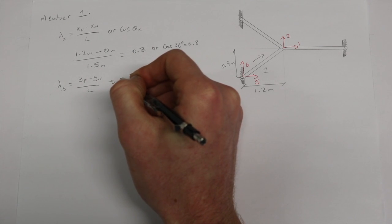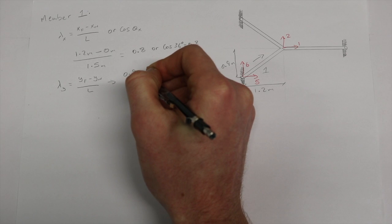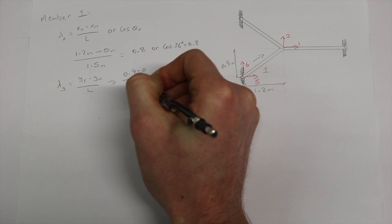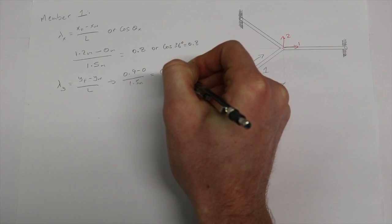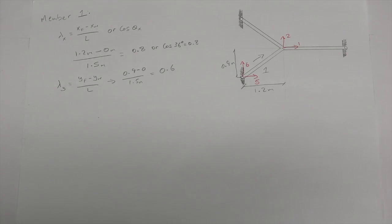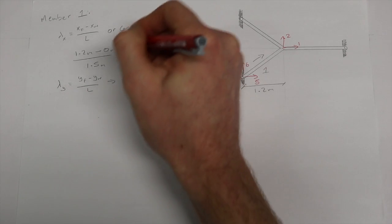We repeat this for lambda y, and we know that the far node is 0.9 meters away in the y direction with the near node at the origin being zero, again dividing by the length of our member 1.5 meters. This gives us a lambda y of 0.6. Using these values for lambda x and lambda y, we can begin to create the member stiffness matrix.